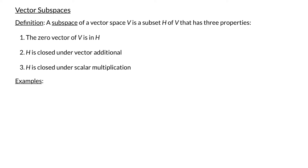In general, let's start with a vector space V. I can look at a subset of it — we'll call that subset H. If H itself satisfies the conditions of a vector space, we call H a subspace of V.